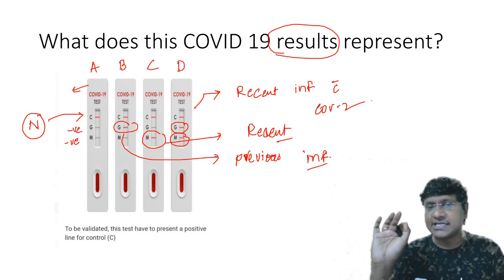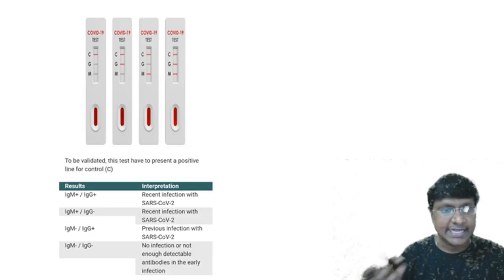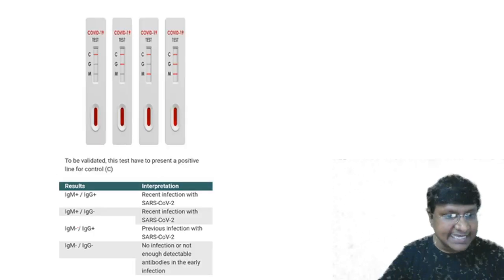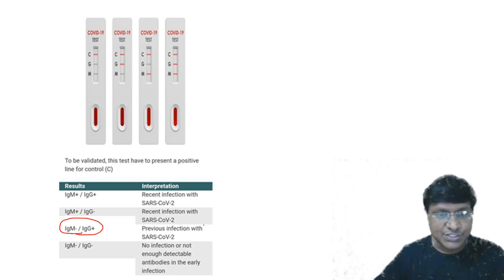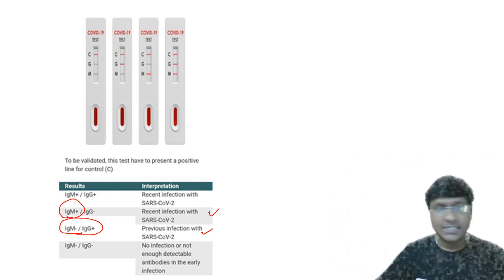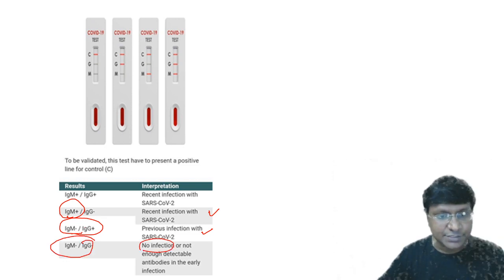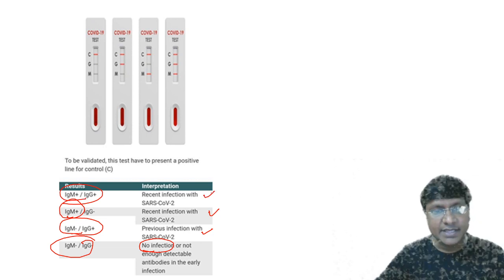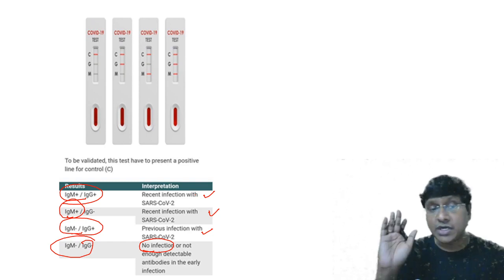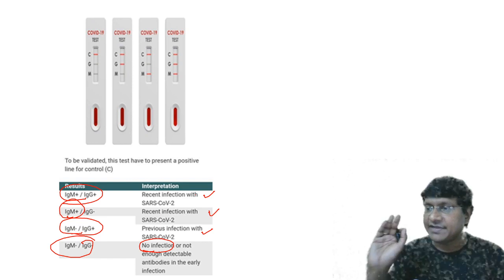Don't jump to the conclusion of reinfection just because both are positive — even in a first infection there can be an overlap. If only IgG is positive: previous infection. Only IgM positive: recent infection. Both negative: no infection. Both positive: recent infection or possible reinfection.